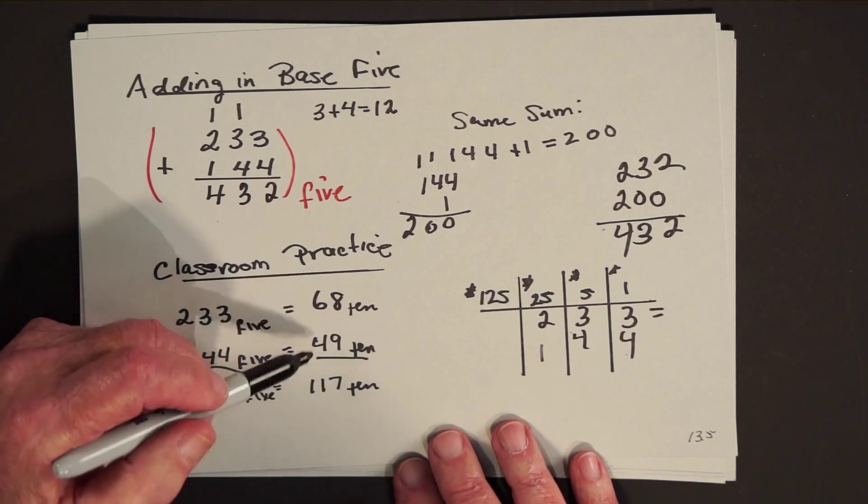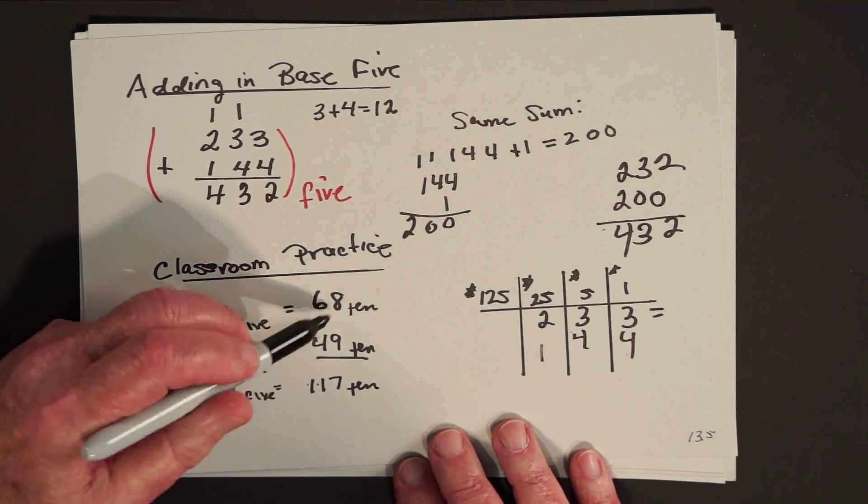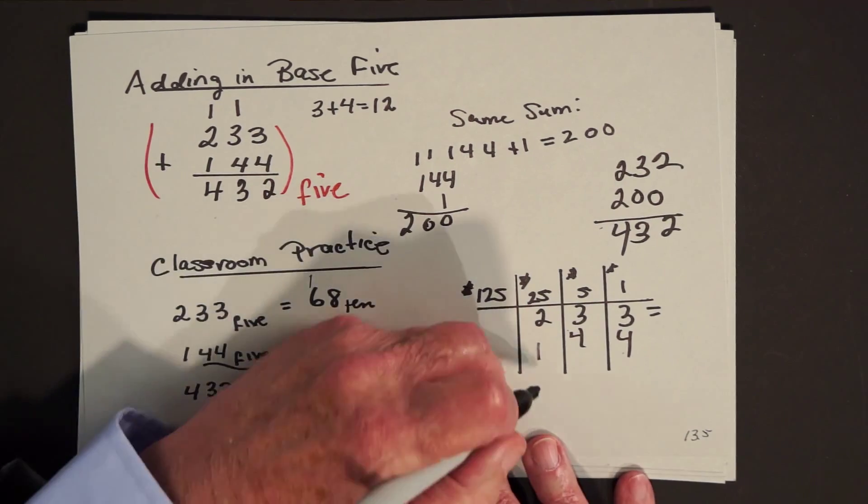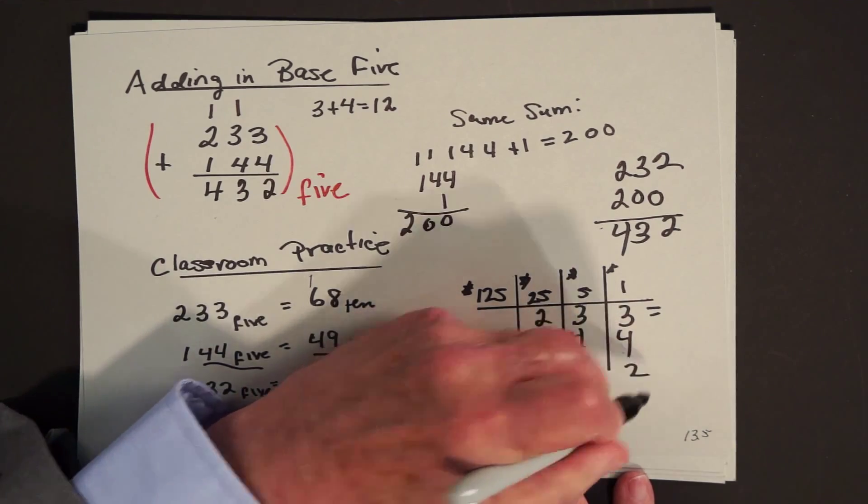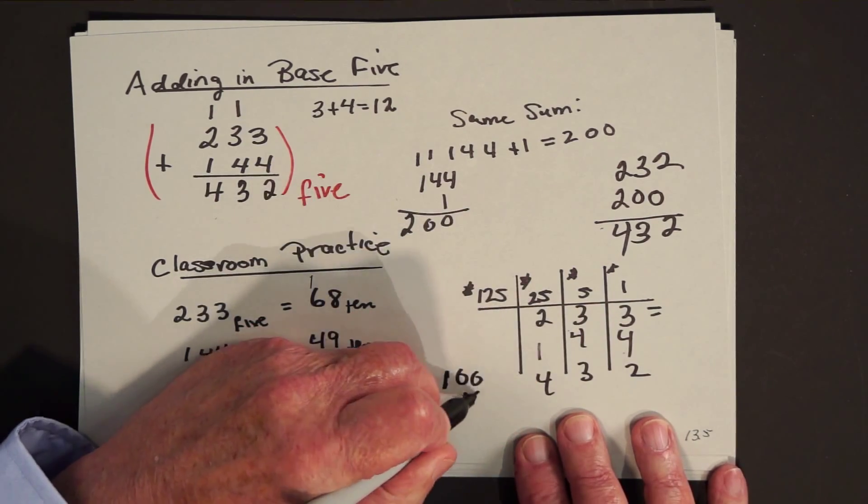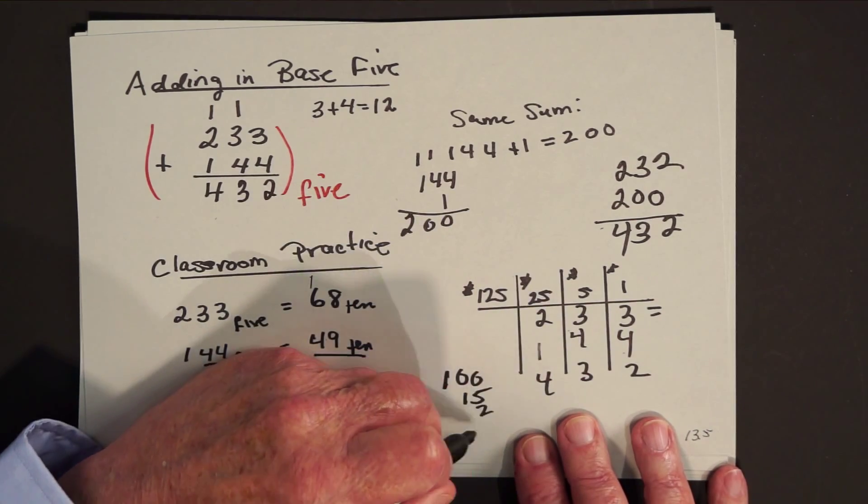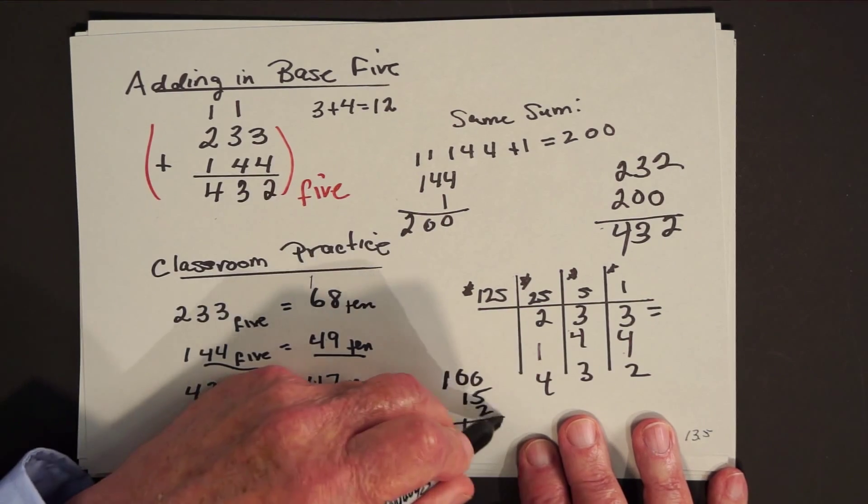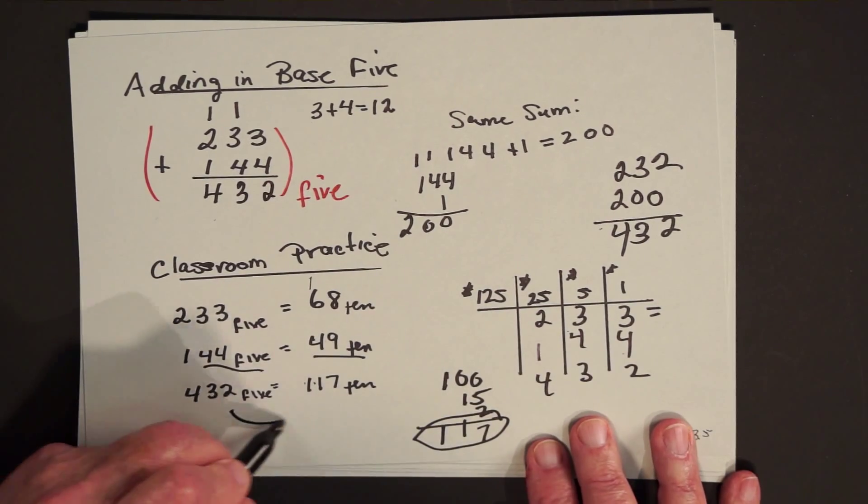What would the answer be in base ten? It would be one seventeen, right, nine and eight is seventeen, carry the one. What is four, three, two? Four twenty-fives is a hundred, three fives is fifteen, two ones is two, so it checks.